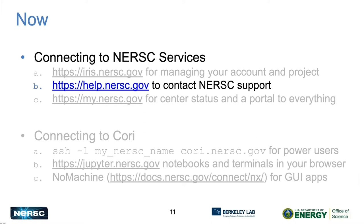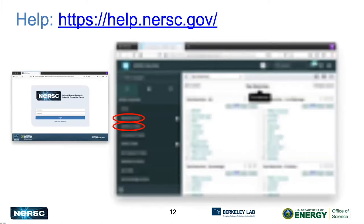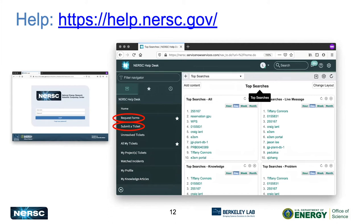Next is getting help. help.nersc.gov lets you contact NERSC support using the same single sign-on as IRIS. When you arrive you get a dashboard with a couple of important links: Request Forms for specific requests like quotas or reservations, and Submit a Ticket, which is what you'll use most commonly if you're stuck and need help from NERSC consultants.